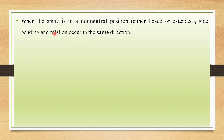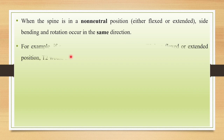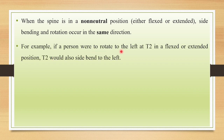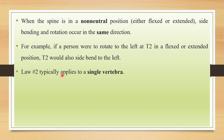Coming to the Second Law: when the spine is in a non-neutral position — either flexed or extended — the Second Law states that side bending and rotation occur in the same direction. This means when you are going to laterally flex towards your right side, simultaneously the rotation will also occur towards the same side. For example, if a person were to rotate towards the left at T2 in a flexed or extended position, T2 would also side bend towards the left side.